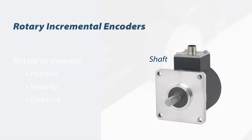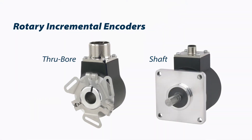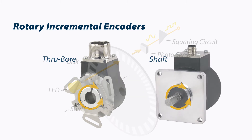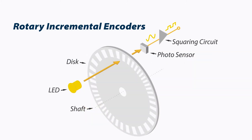Many come in a form factor that has a shaft or a throughbore where you can put it on a shaft. When you rotate an encoder it creates pulses — specifically an incremental encoder. You rotate the shaft, there's a bunch of lines on the disc, the light shining through that disc is interrupted by the lines and we create electrical pulses coming out.